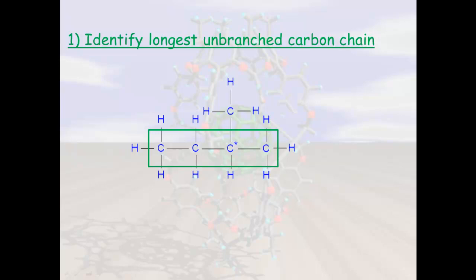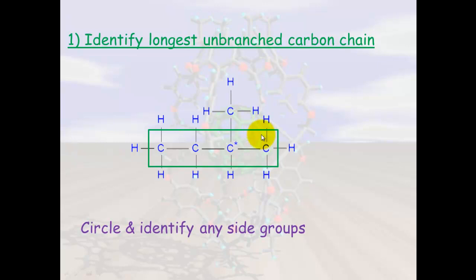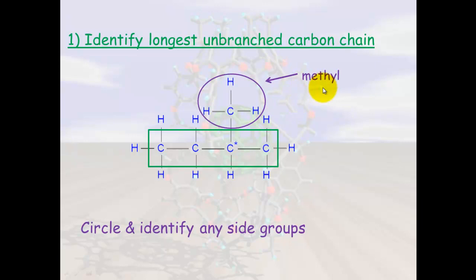The next thing we need to do is circle any groups that are branching off — any side groups that are not part of this carbon chain, just circle them and identify them. This is a CH3 group and it's called a methyl group, and we'll talk more about the names of functional groups at the end of this video. The most important thing here is identifying the longest unbranched carbon chain and putting circles around any side groups.